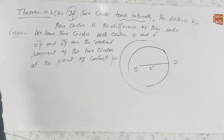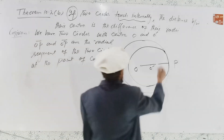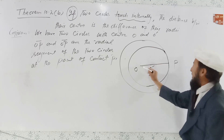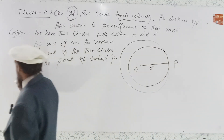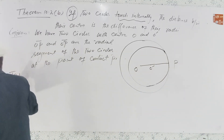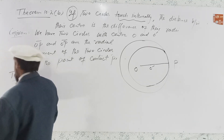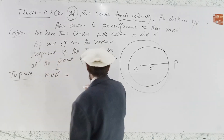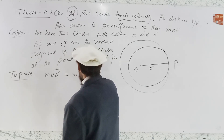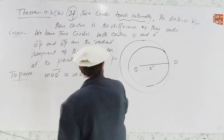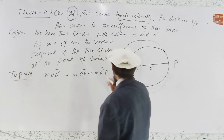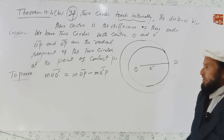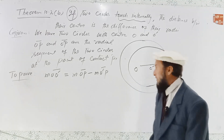Now we want to prove that the distance between their centers — measurement OO dash — is equal to measurement OP minus measurement O dash P. According to the definition of segment postulates and addition of segment postulates, we want to prove this.